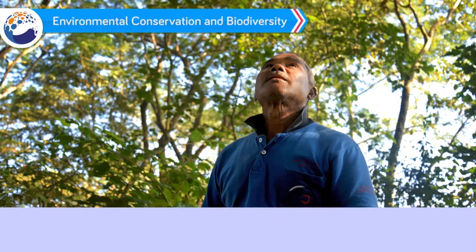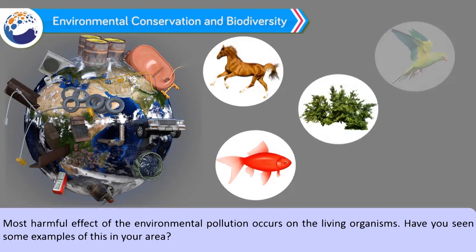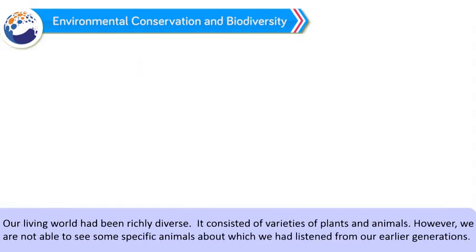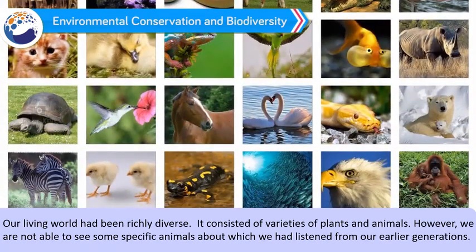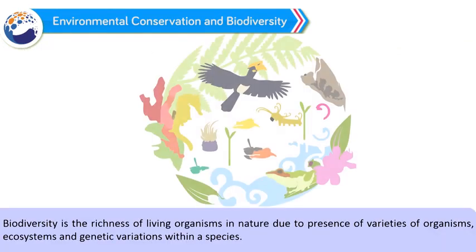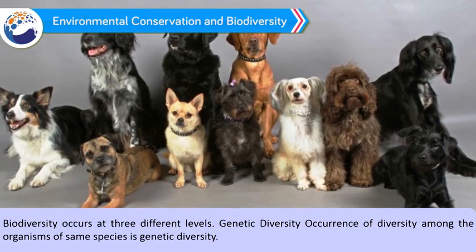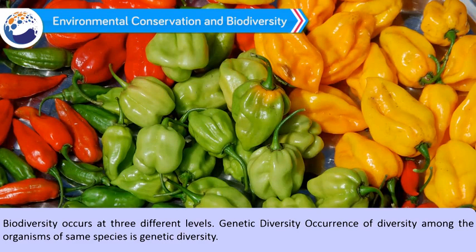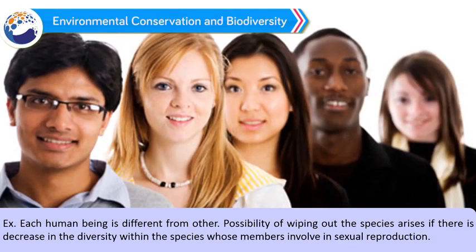Environmental Conservation and Biodiversity: The most harmful effect of environmental pollution occurs on living organisms. Our living world had been richly diverse, consisting of varieties of plants and animals. However, we are not able to see some specific animals about which we had heard from earlier generations. Biodiversity is the richness of living organisms in nature due to the presence of varieties of organisms, ecosystems, and genetic variations within a species. Biodiversity occurs at three different levels. Genetic Diversity: The occurrence of diversity among organisms of the same species is genetic diversity. For example, each human being is different from another. The possibility of wiping out a species arises if there is a decrease in diversity within a species whose members involve in sexual reproduction.